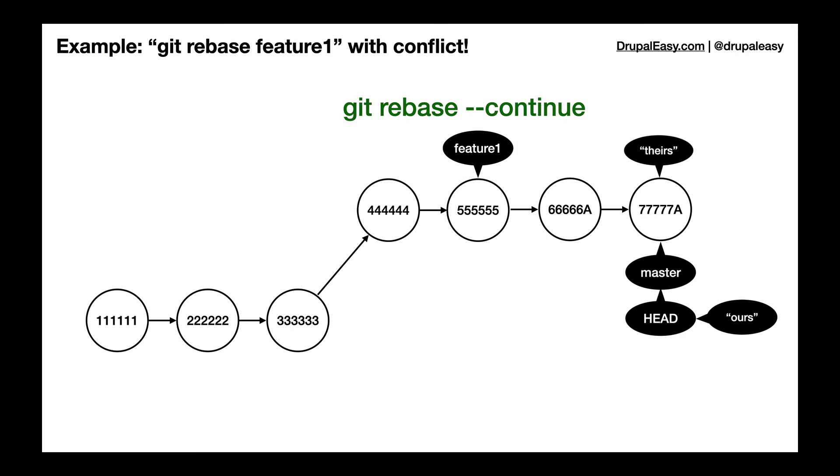And at this point you're done. The feature one branch has been rebased onto master and you're good to go moving forward with no commit bubbles and everything is as you would expect it to be. Alrighty, thanks for watching.